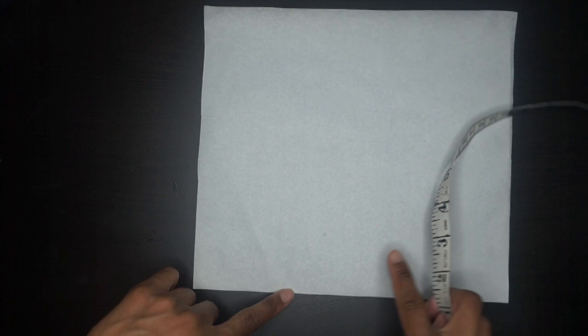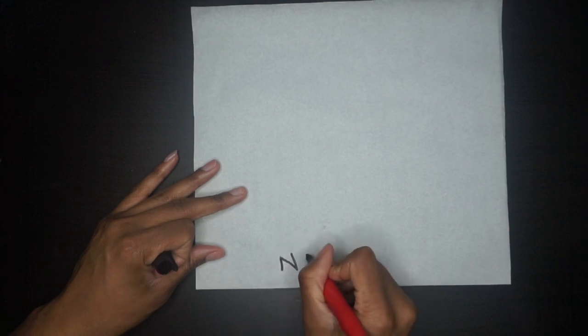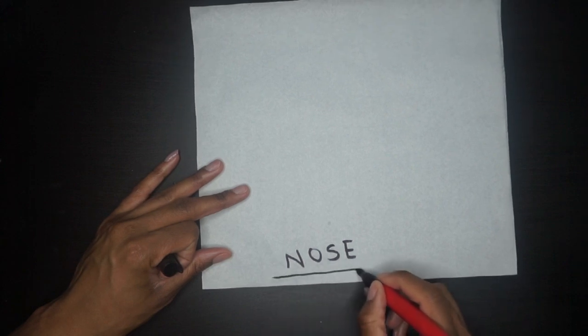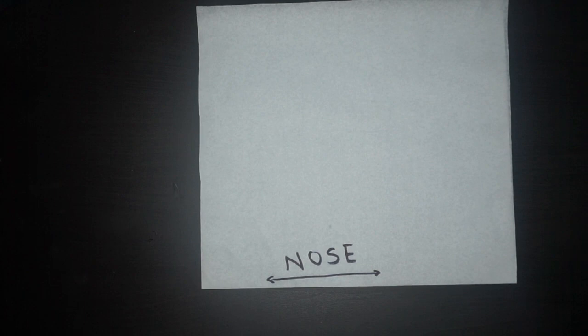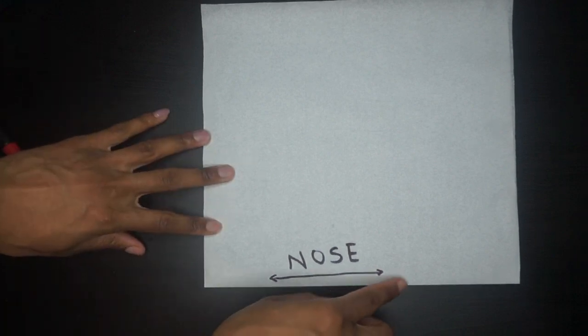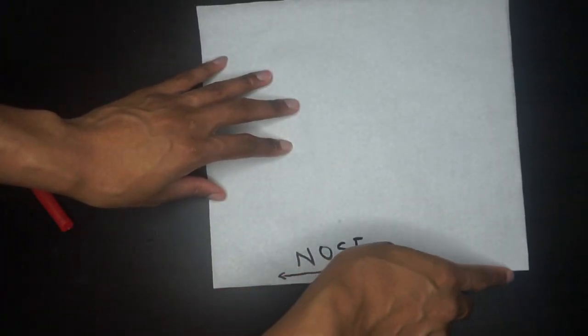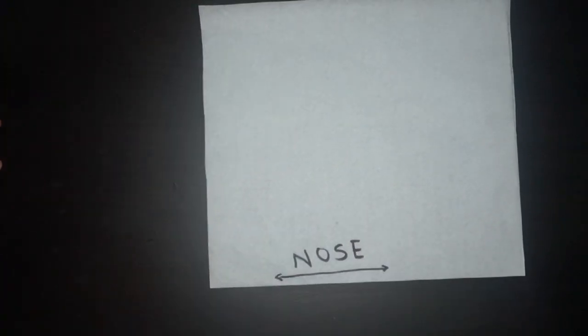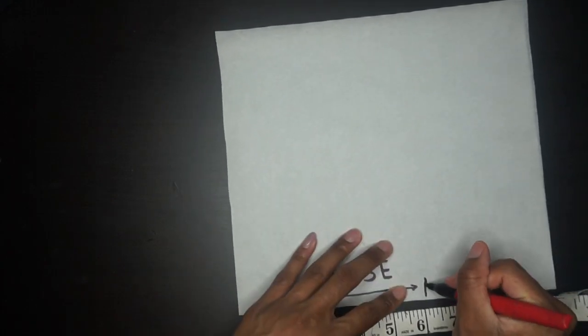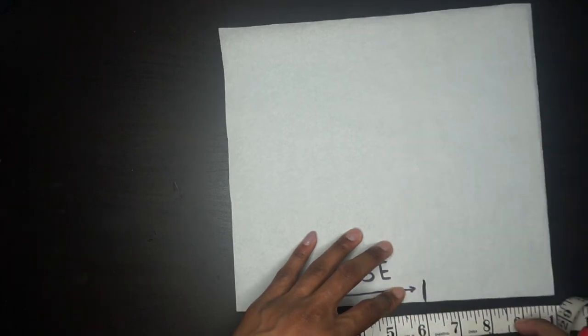The folded edge is going to be our nose measurement. The length of that is going to be nose to chin. Remember to keep in mind that this measurement is on the fold.